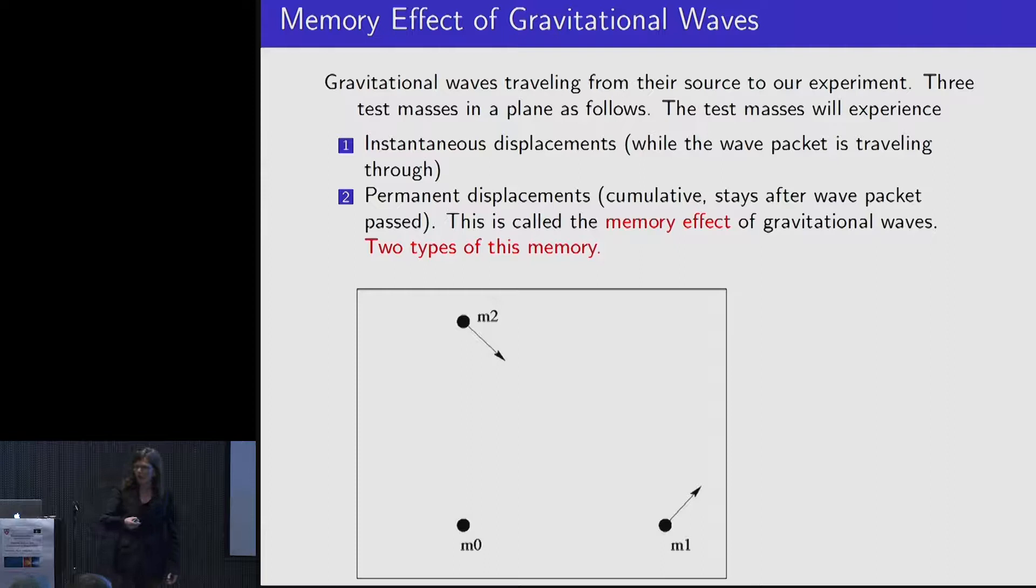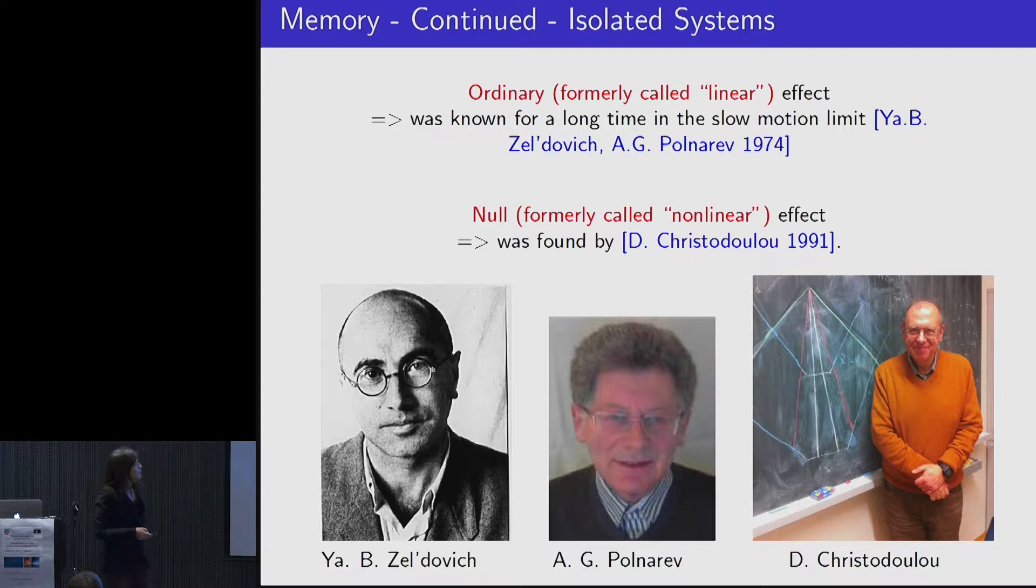What is the memory? The memory is also predicted by the Einstein equations, and this is what we call a permanent change of the spacetime. If these are three test masses, like they are also used in LIGO, and let's assume the wave comes from this direction, what has been seen already are these instantaneous displacements that LIGO has shown us. But what happens when the wave packet travels through and we are back at rest again? GR predicts that there will be a permanent change of the spacetime itself. Because these test masses are floating on geodesics in spacetime, they are following the geodesic motion, so one should be able to see that in the future as a permanent change.